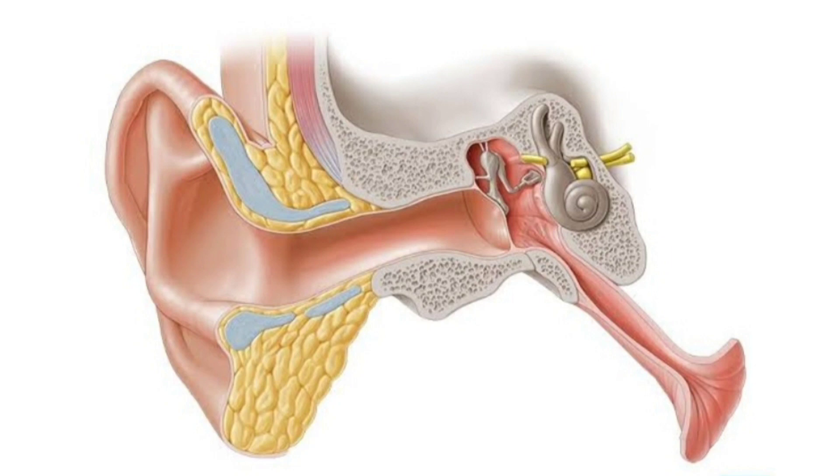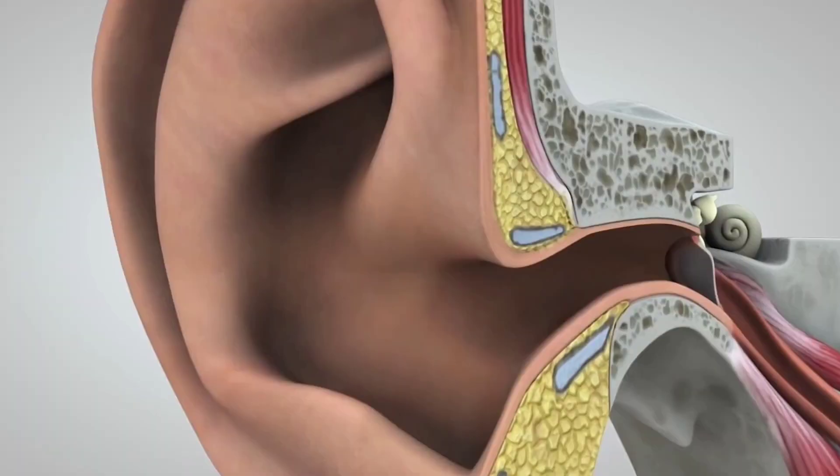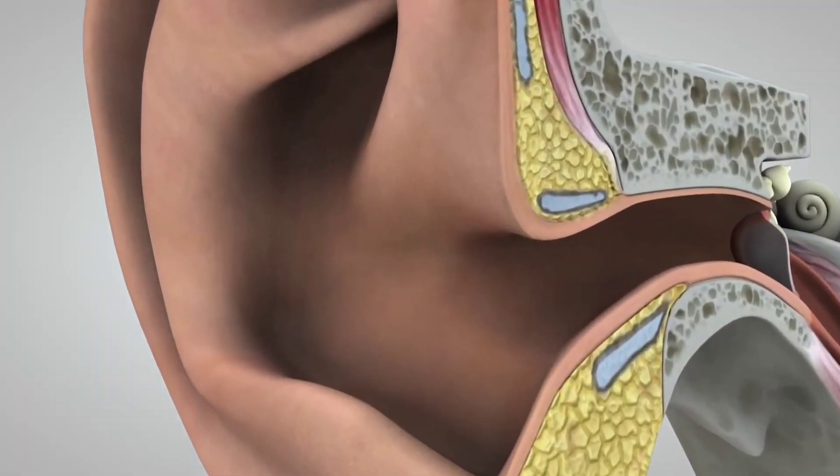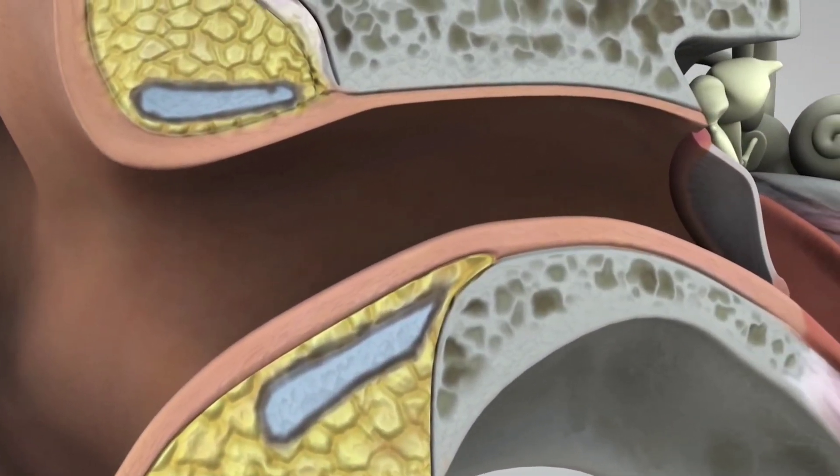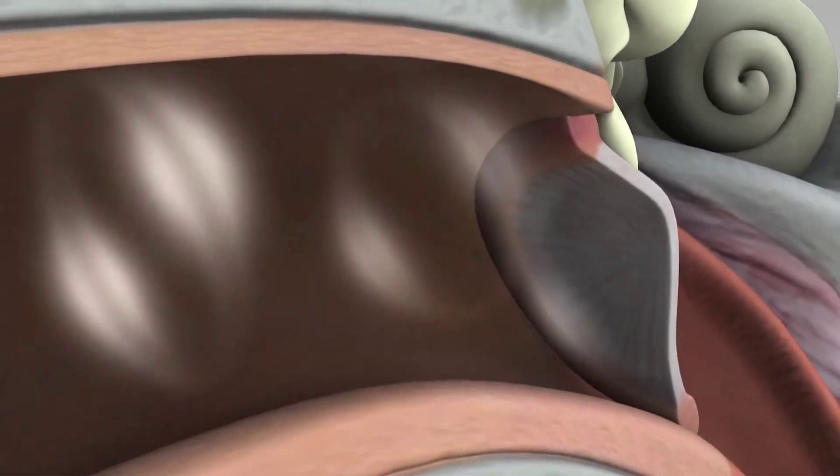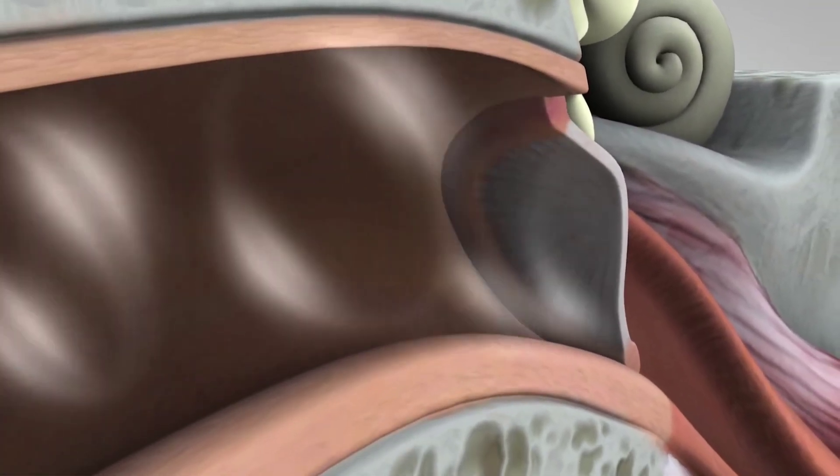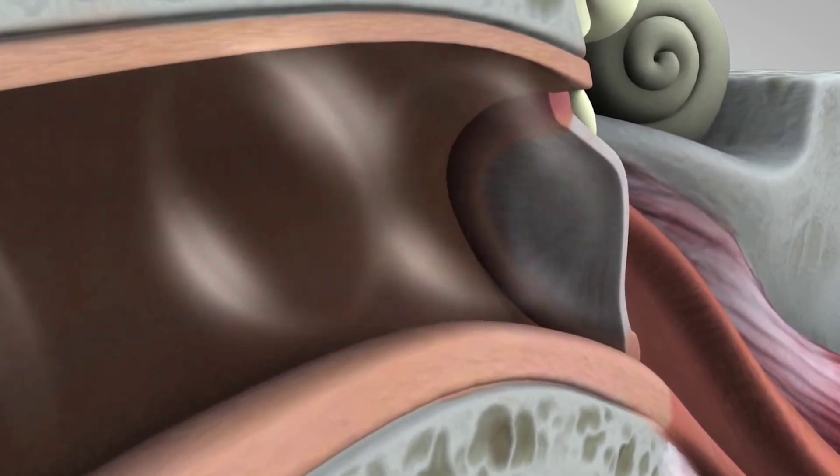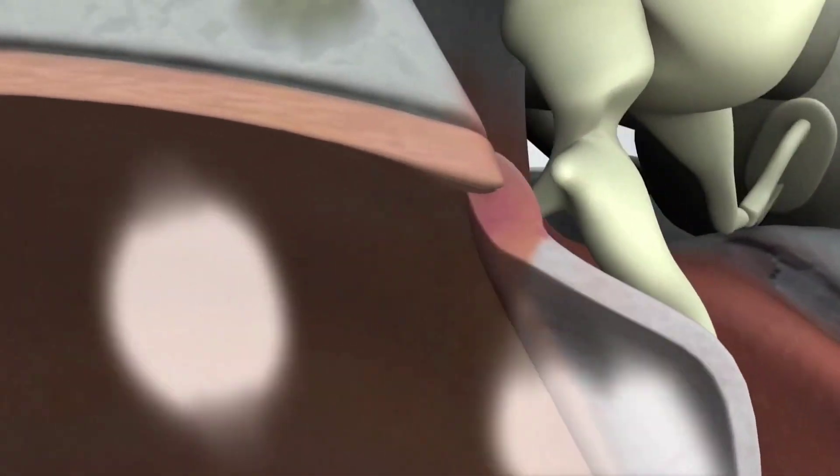The eardrum vibrates from the incoming sound waves and sends these vibrations to the auditory canal. It catches the sound waves and conducts them through the external auditory canal. The sound waves reach the eardrum and then reach the three tiny bones.